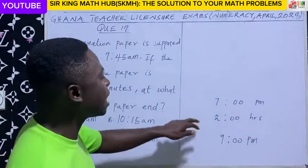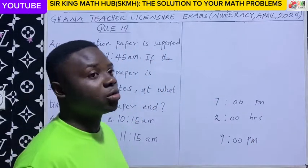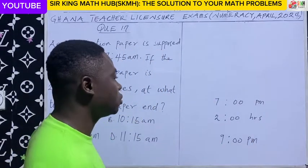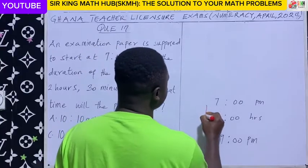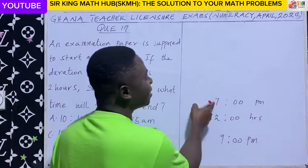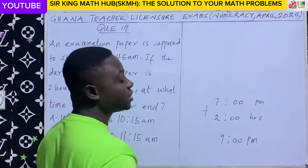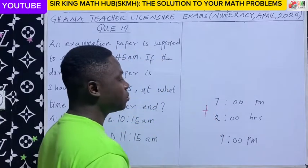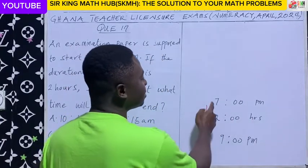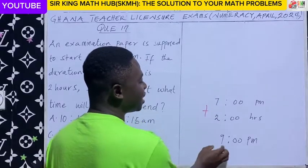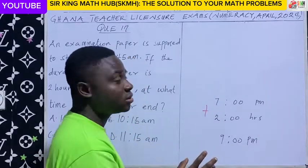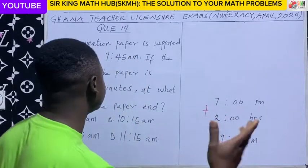So how did we get 9 o'clock pm? We added the start time to the duration. You add 2 to 7, that gives us 9. So the same concept applies here.